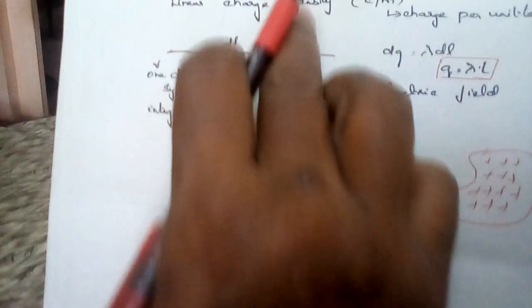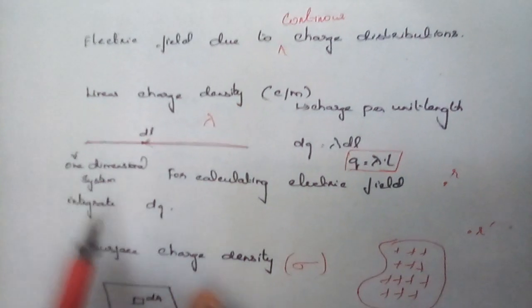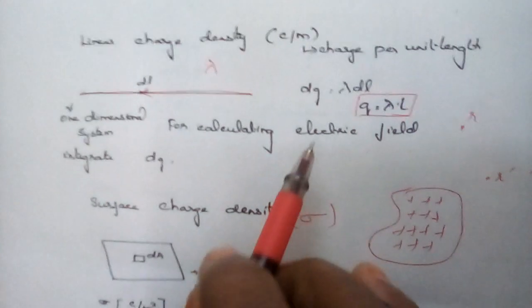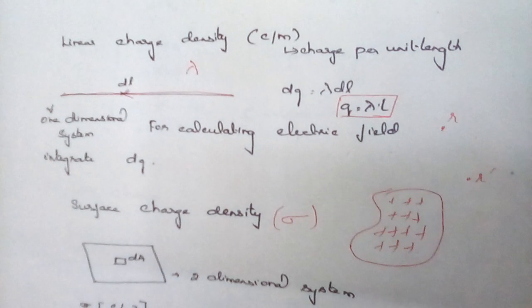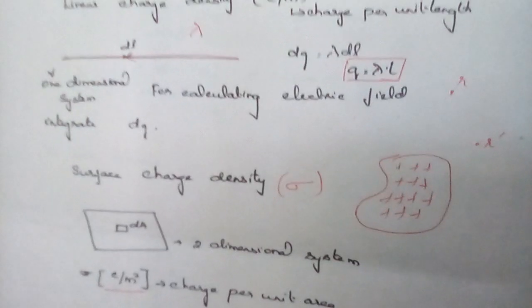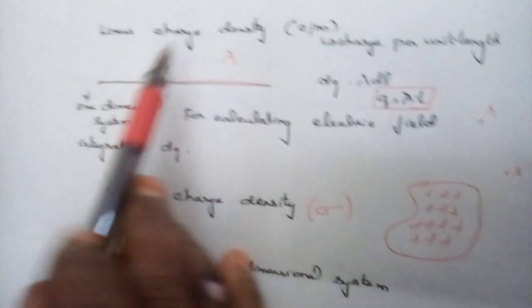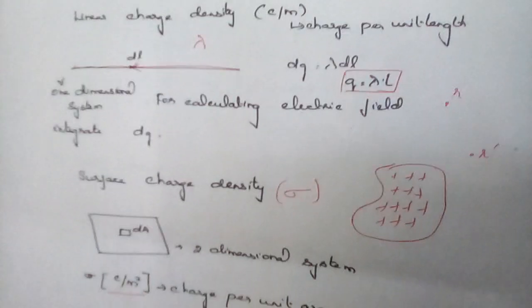What we have discussed is the electric field due to continuous charge distribution. The electric field due to point charge distribution is represented by Coulomb's law. The continuous charge distribution application will be discussed later in session.